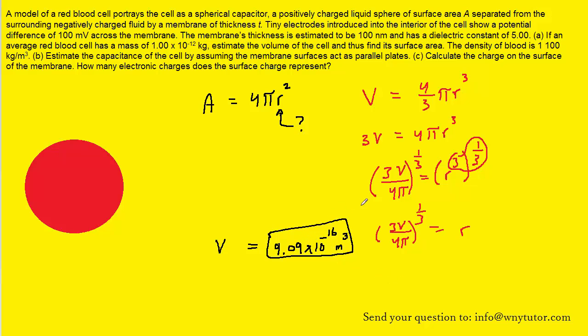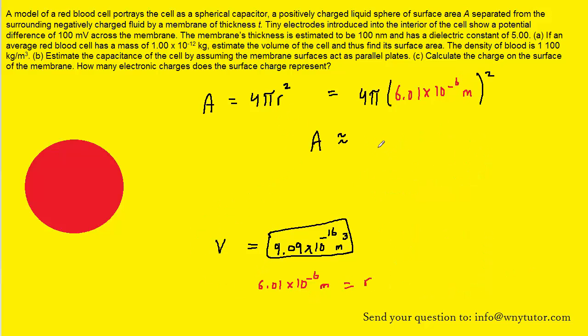Let's go ahead and take the volume and plug that in. And then when you punch that into your calculator, you can find that the radius is roughly 6.01 times 10 to the negative 6, and the units of that radius will be meters. So now that we have the radius, we can take that and plug it into the area formula. And then when you punch that into your calculator, you will find the area is roughly 4.54 times 10 to the minus 10. The unit here will be meters squared, and so this is the correct answer to the second part of part A.